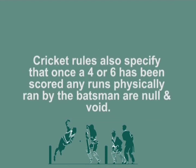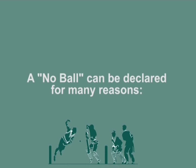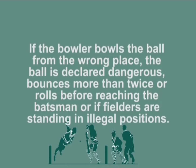Cricket rules specify that once a four or six has been scored, any runs physically run by the batsman are null and void — they will only obtain the four or six runs. Otherwise, runs can be scored according to cricket rules including no balls, wide balls, byes, and leg byes. A no ball can be declared for many reasons; for example, if the bowler bowls from the wrong place, or the ball is declared dangerous, or it bounces more than twice, or rolls before reaching the batsman, or if fielders are standing in illegal positions.